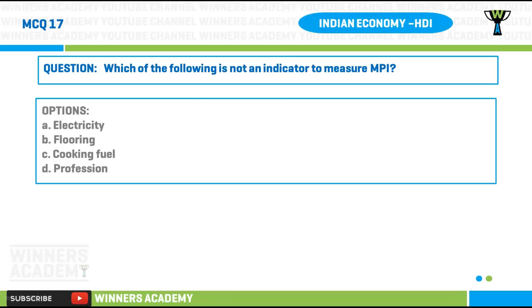Question number seventeen: which of the following is not an indicator to measure the Multi-dimensional Poverty Index? Option A) electricity, option B) flooring, option C) cooking fuel, option D) profession.